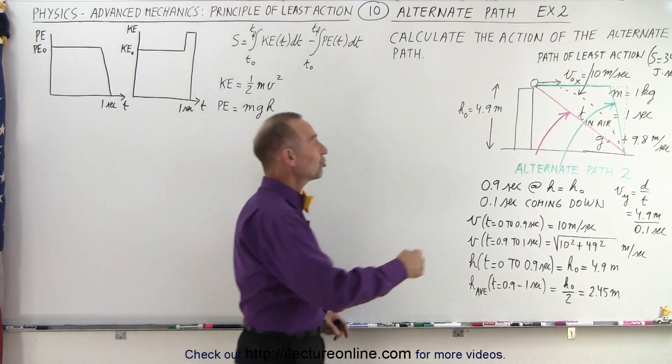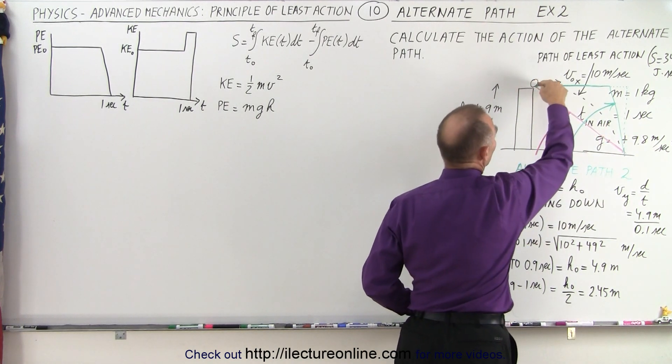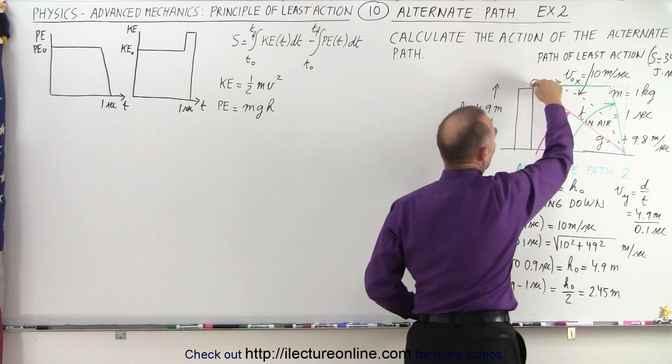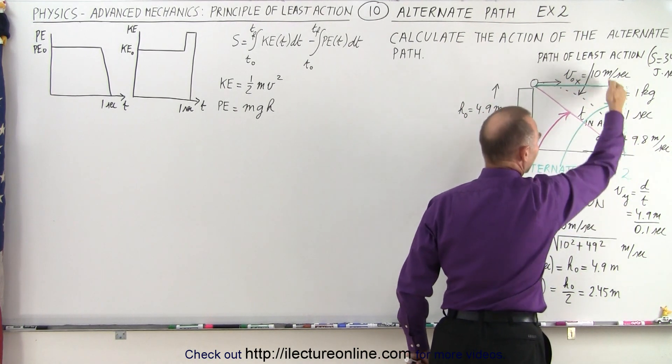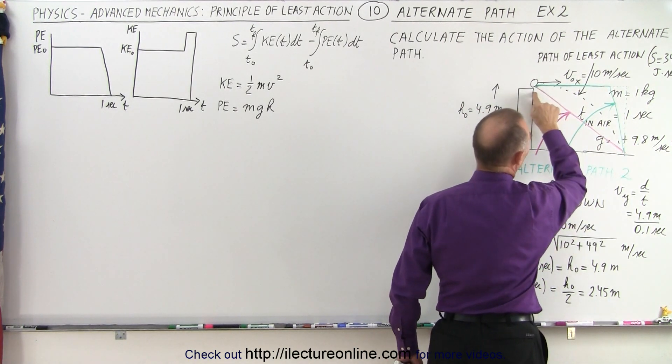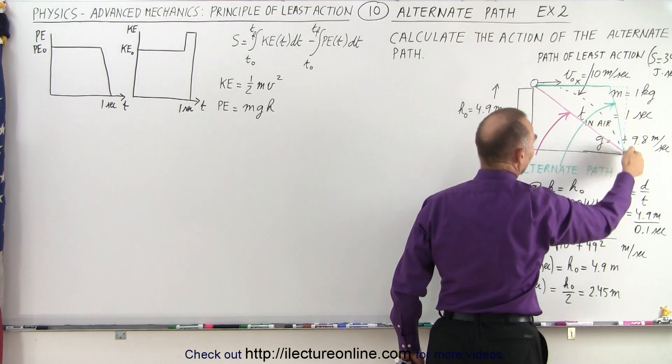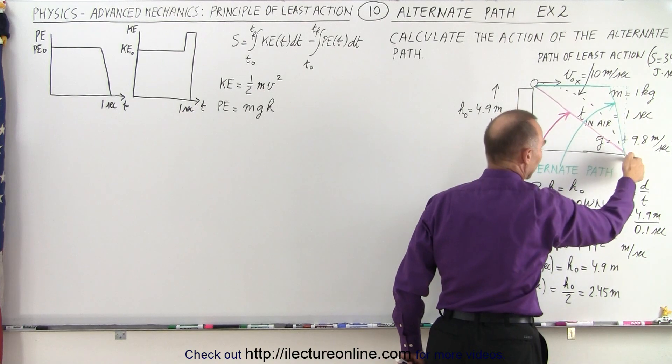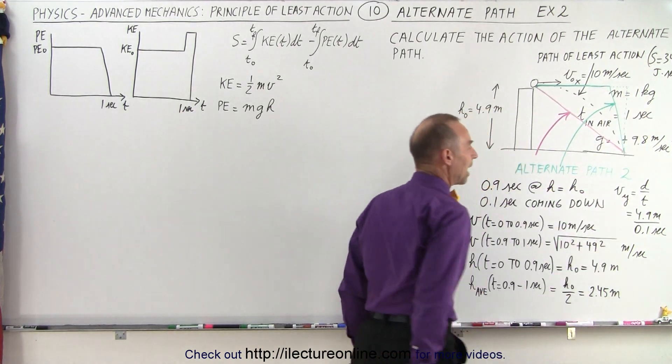In the previous video, we tried the alternate path coming straight down this way. This time we're going to take an alternate path like this: we're going to travel at the same height for a certain amount of time, and then come straight down. Notice the first 0.9 seconds will make it 9 meters out, and then for the last part of the path, we'll just take it down this way, so we have a constant velocity down and a constant velocity out.